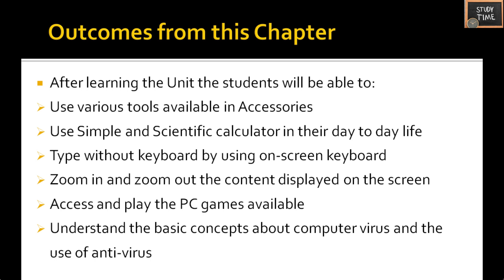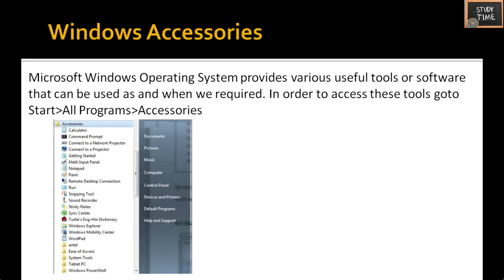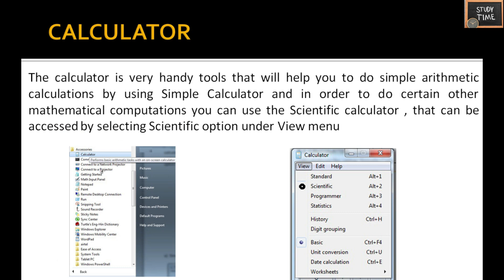We will also understand the basic concept about computer virus and the use of antivirus. First we will see Windows Accessories. In order to access the tools, go to Start > All Programs > Accessories. Click on Accessories and here you will see Calculator, Paint, and all the accessories you want to access displayed under Accessories.